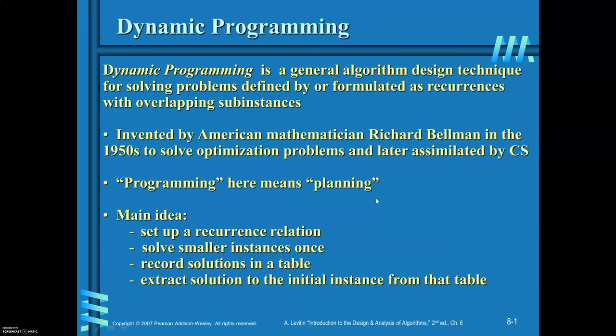Dynamic programming is a design technique wherein you can solve a problem which is defined by or formulated as recurrences with overlapping circumstances. This was invented by American mathematician Richard Bellman in 1950. Dynamic programming was used to solve optimization problems, and later it was adopted by computer science.